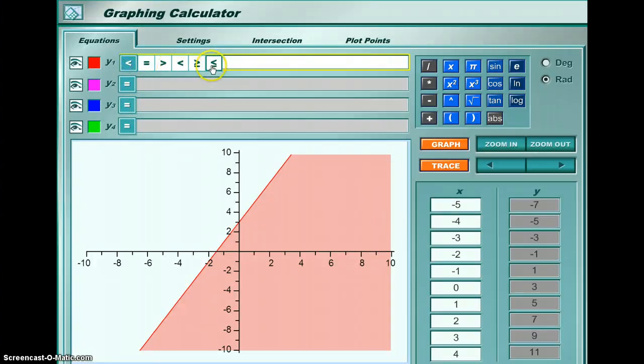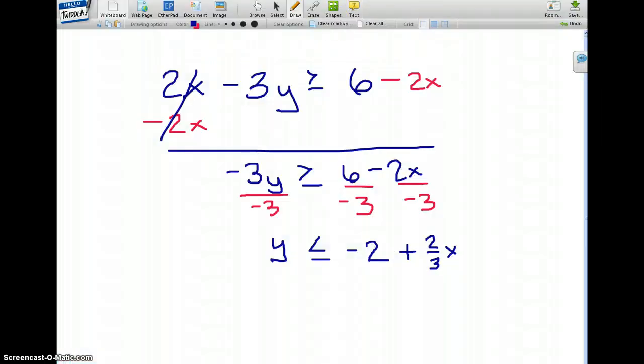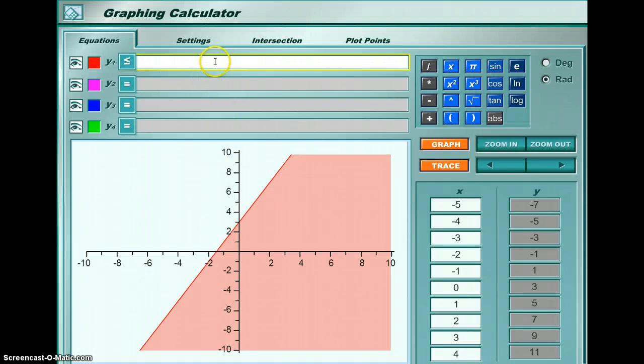So let's change this to less than or equal. Here it is. And I'm going to type, let me see what was the next thing, negative 2 plus 2 thirds. Negative 2 plus, now the fractions always put it in parentheses.